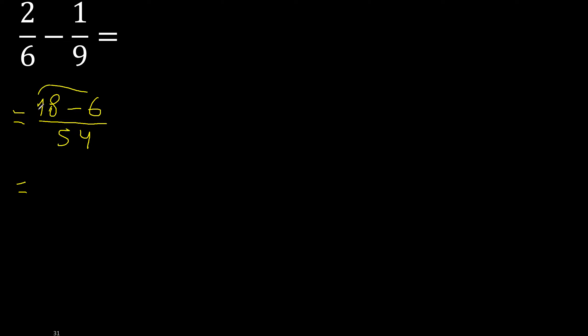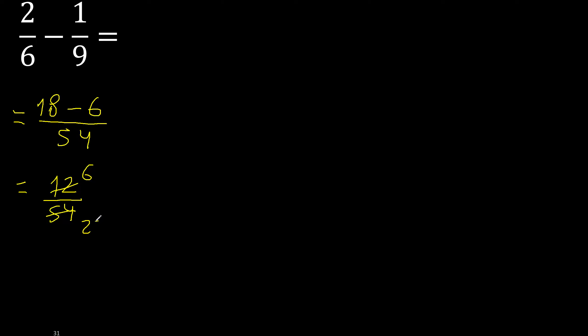12 over 54 can be simplified because it can be divided by the same number. Divided by 2: 12 divided by 2 = 6, 54 divided by 2 = 27. Then divided by 3: divided by 3 is 9.